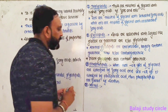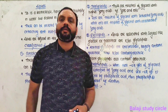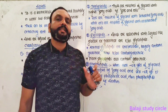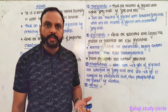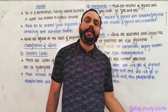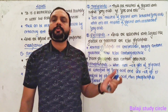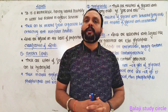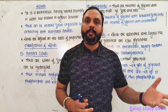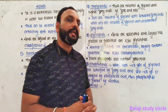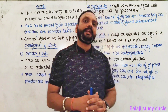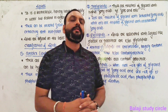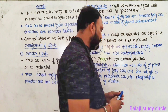Waxes are secreted by some plants and animals. Especially aquatic plants have waxy secretion on their body, stems, or leaves. Waxes are esters of fatty acids with long-chain alcohols.